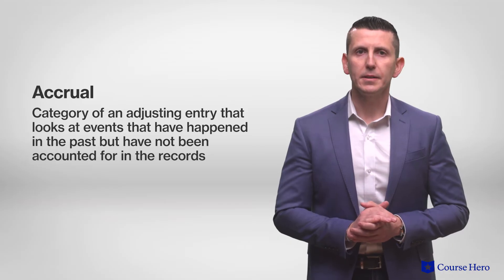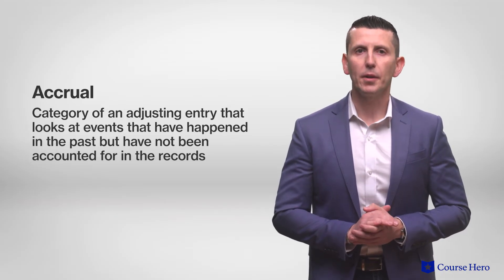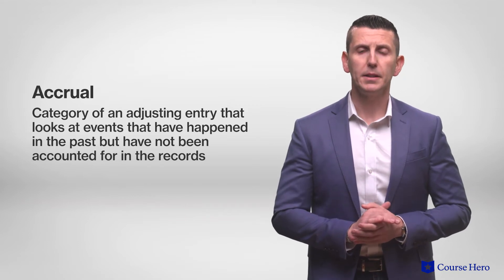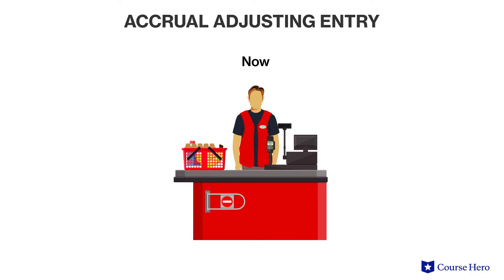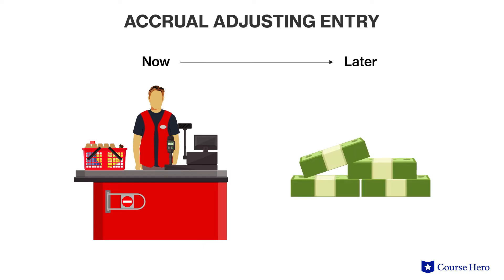Adjusting journal entries can generally be categorized into two groups: accruals and deferrals. Accrual entries typically look at events that have happened in the past but have not been accounted for in the records, typically because no cash has yet been exchanged. For example, an accrual adjusting entry is made to recognize revenue when a company provides a service but has not yet received cash, and therefore the corresponding journal entry is to accounts receivable rather than cash.